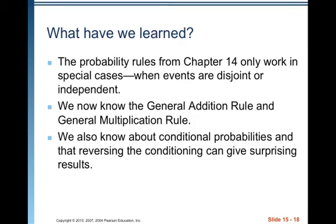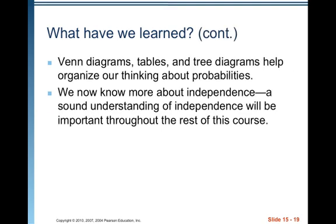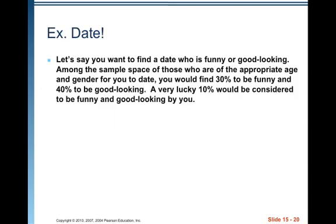We learned that the probability rules from Chapter 14 are for special cases when it comes to adding and multiplying — now we know how to do that in general. We've talked about reversing the conditioning, and we've looked at Venn diagrams, tables, and tree diagrams throughout our entire discussion of probability. They help us organize our thinking, and we know more about independence. A sound understanding of independence will be very important throughout the rest of the course.